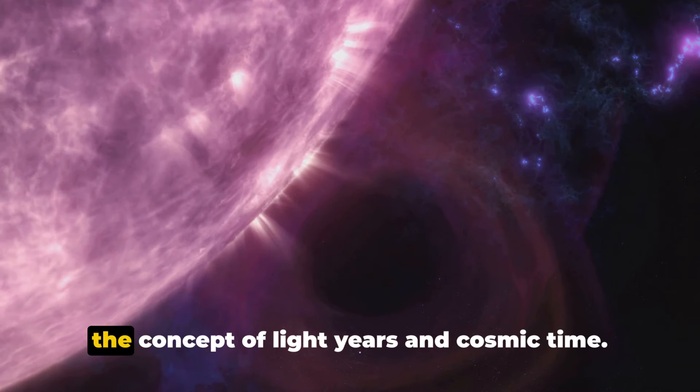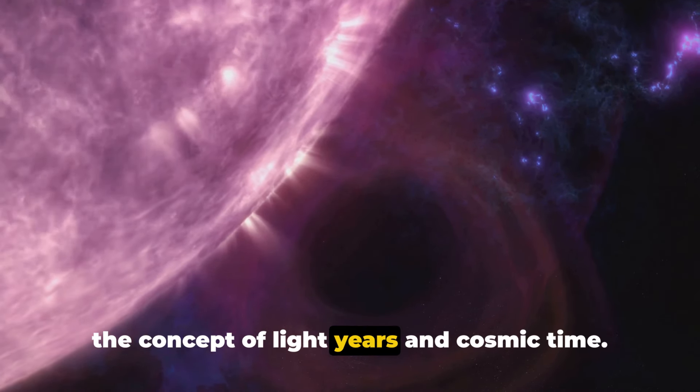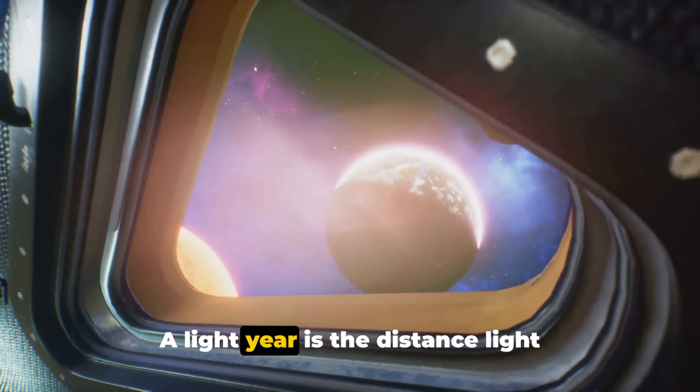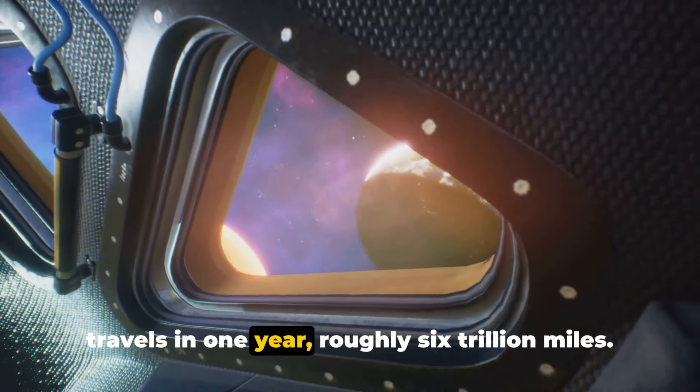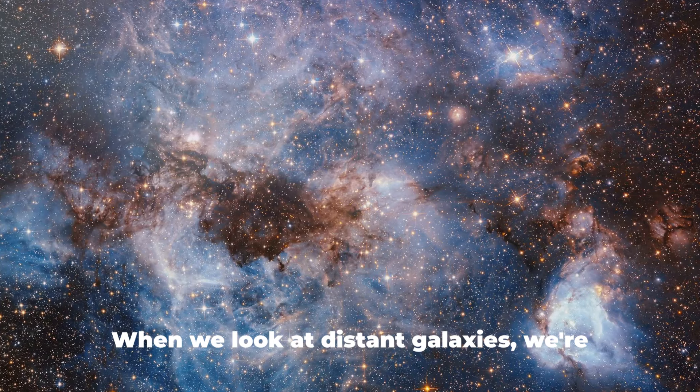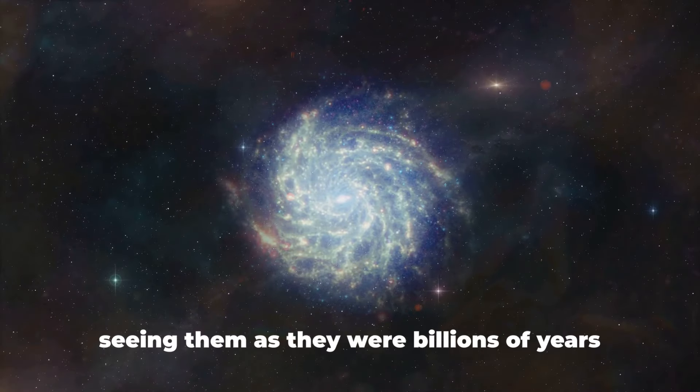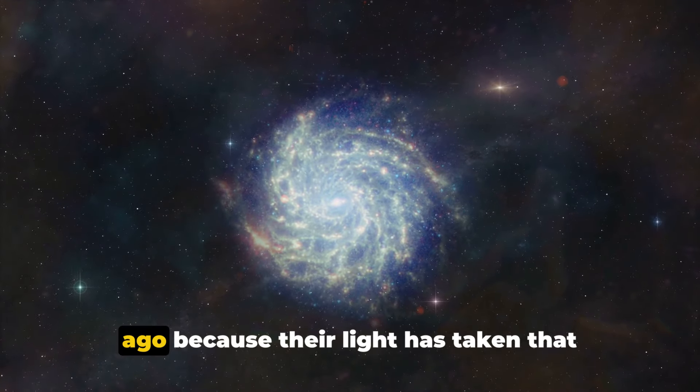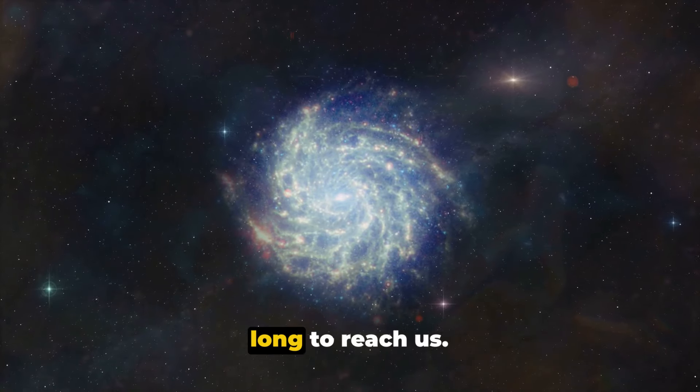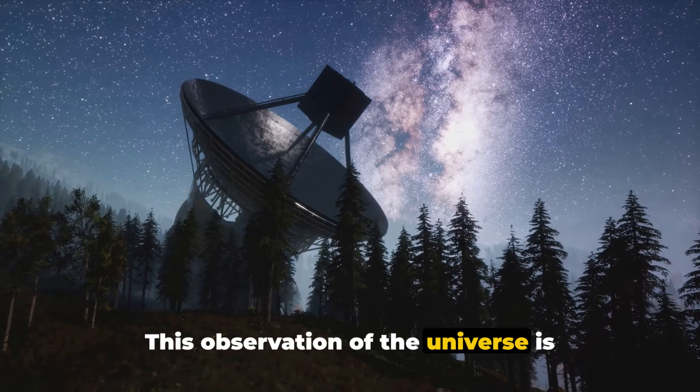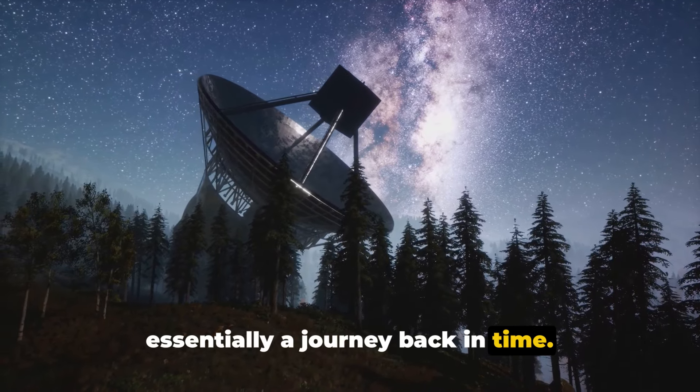Now let's try to wrap our heads around the concept of light years and cosmic time. A light year is the distance light travels in one year, roughly six trillion miles. When we look at distant galaxies, we're seeing them as they were billions of years ago, because their light has taken that long to reach us. This observation of the universe is essentially a journey back in time.